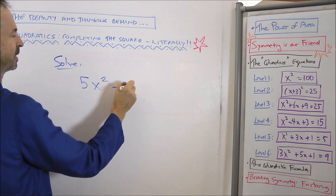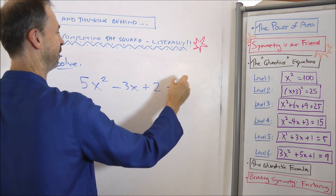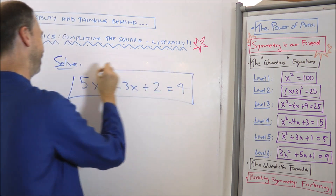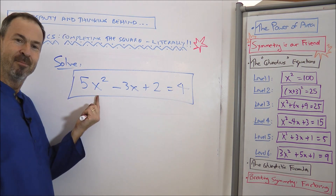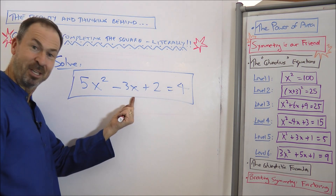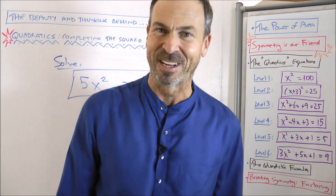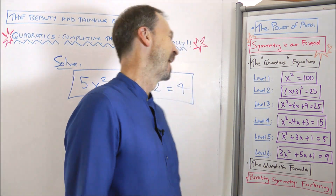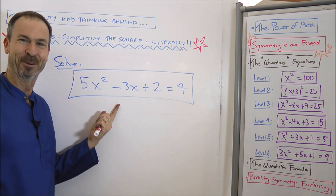Please solve this one — because if you can solve this one, you're golden to solve anyone: 5x squared minus 3x plus 2 equals 4. A number in the front, which is awkward. An odd number in the middle, which is awkward. And the rest, which probably doesn't work out nicely. But you can probably fix it to be what you want it to be. You can make this work — go for it.